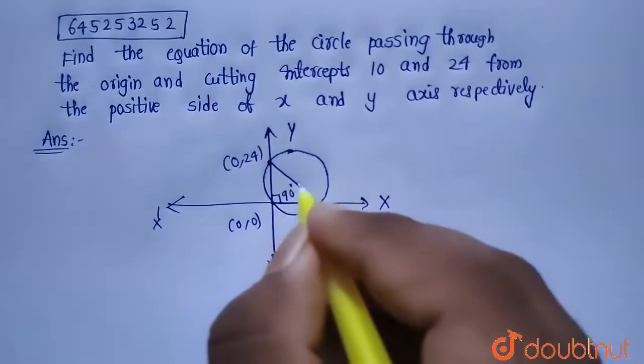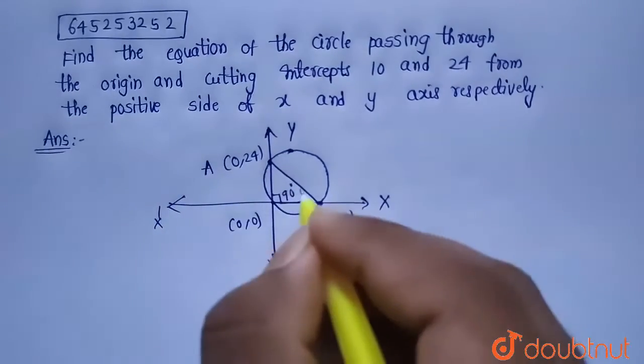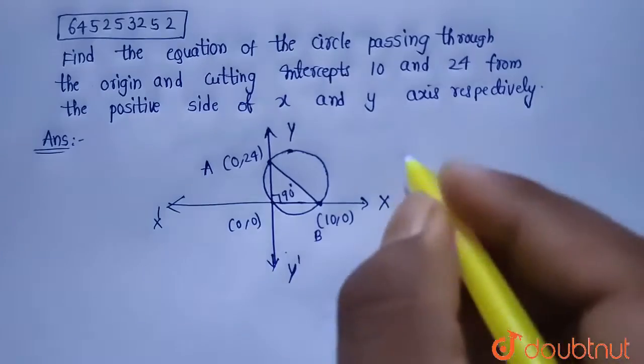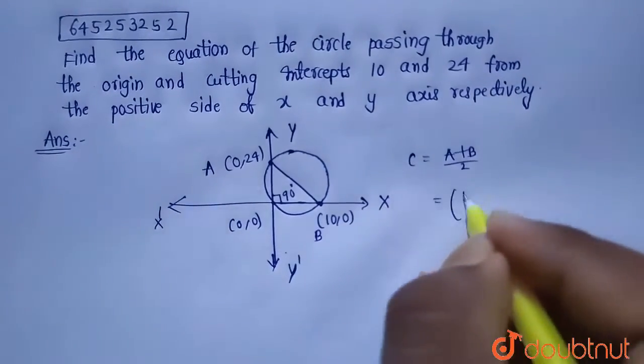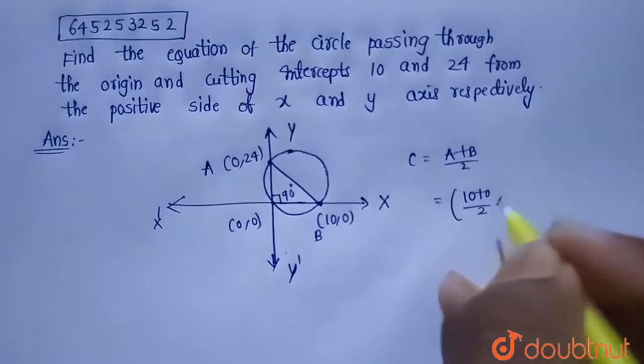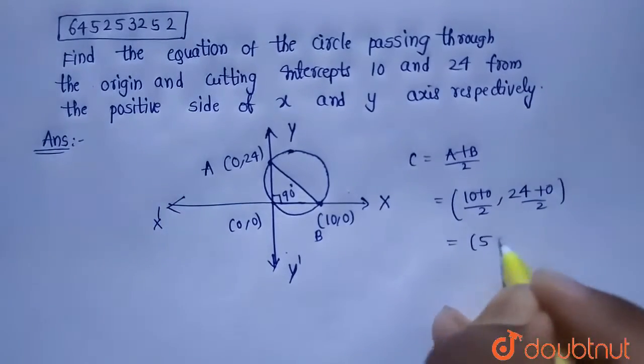Now in order to find the center, let's find out the midpoint of these two, because center is nothing but midpoint of endpoints of diameter. So C equals A plus B by 2, that is 10 plus 0 by 2 and 24 plus 0 by 2, which equals 5 comma 12.